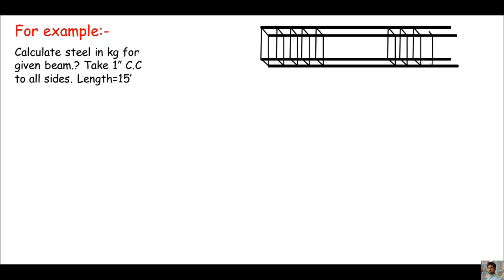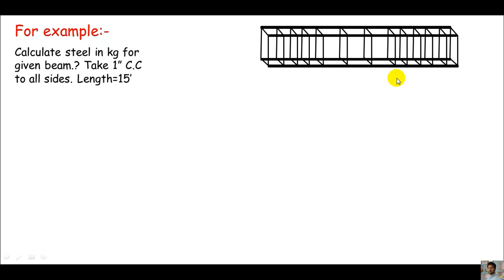You can clearly see the stirrup spacing to the right and left side, and at the midpoint the spacing is a little larger than on either side. The spacing near the supports is minimum and the spacing at mid-span is much larger, because the shear force near the support is maximum and the shear force at mid-span is minimum. For better understanding of shear forces and bending moments in beams, you may watch the playlist named Structural Analysis by SLK in the same channel.